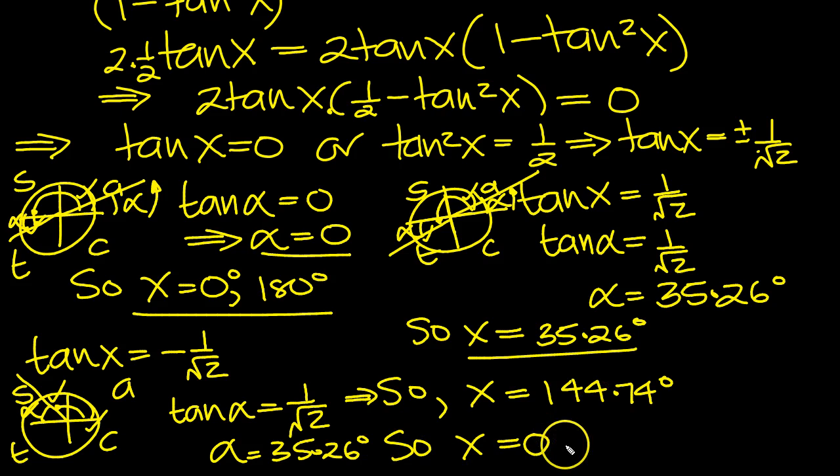So in conclusion then, we've got x equals 0, x equals 35.26, x equals 144.74, and the last one was x equals 180, wasn't it? So four solutions there for the value of x.